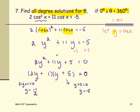Recall y represented cosine of x. Replace y with cosine x. Cosine x equals negative 1 half for the first one and cosine x equals negative 5 for the second one.